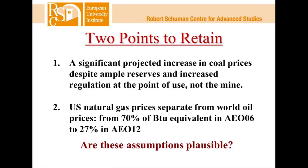The real question is whether these assumptions are plausible. Models simply produce numbers based on assumptions fed into them. The two most important assumptions explaining the predicted change in U.S. CO2 emissions are the increase in coal prices and the belief that natural gas prices will not converge with world oil prices — creating an island of extremely cheap natural gas prices in the United States that won't come together through oil prices coming down or U.S. gas prices rising due to exports.